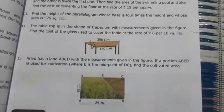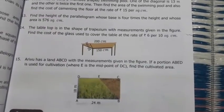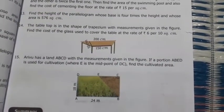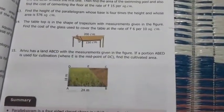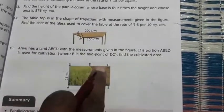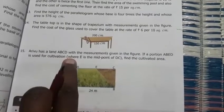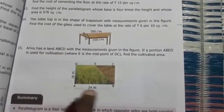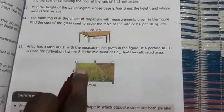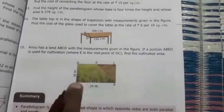5th one. Arivu has a land ABCD with the measurement given in the figure. See that ABCD, what type of land? It's one of the rectangle. If a portion ABED is used for cultivation, E is the midpoint of DC. Find the cultivation area.